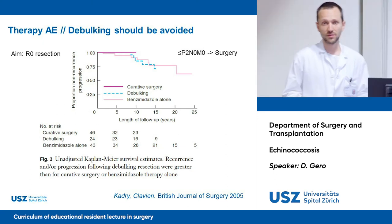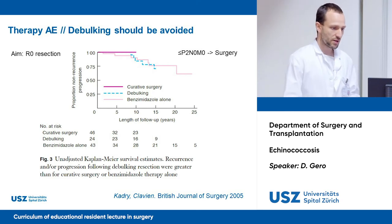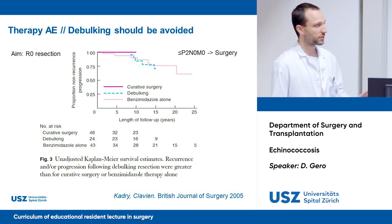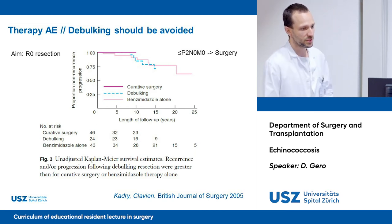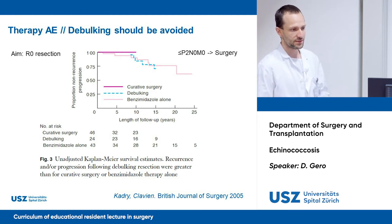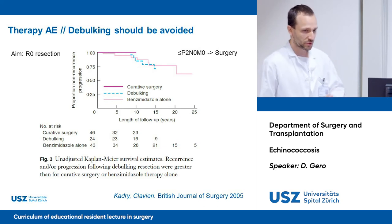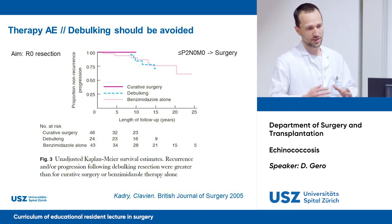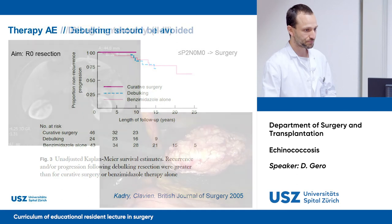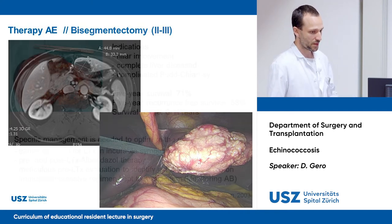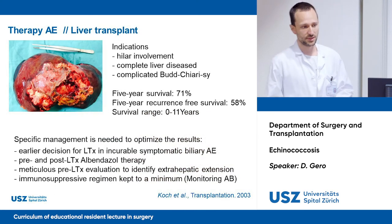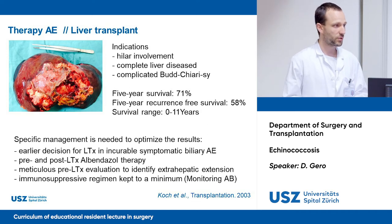For the treatment of alveolar echinococcosis, the aim is R0 resection. A publication from our department in BJS 2005 showed on a Kaplan-Meier curve that very long disease-free survival can be achieved with curative surgery. However, debulking for locally advanced disease does not achieve better disease-free survival than medical treatment alone after 10 years. The WHO expert consensus suggests surgery for stages P1 and P2, with higher stages discussed case by case. For located alveolar echinococcosis in the left liver, a bisegmentectomy can be performed. When hilar involvement, complete liver disease, or vascular complications like Budd-Chiari syndrome are present, liver transplantation must be considered.